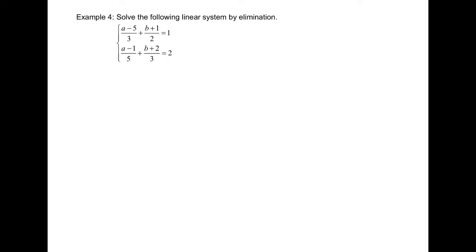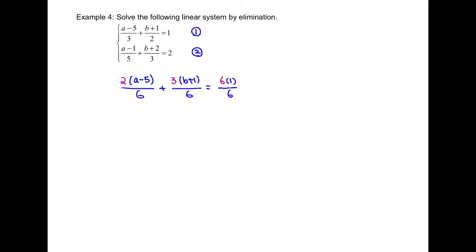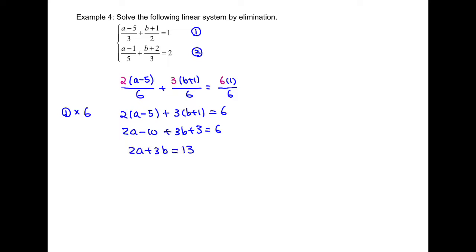Example 4: now we're going to solve a linear system with fractions. First, let's label equation 1 and equation 2, and we're going to simplify each equation. In equation 1, the common denominator between 2 and 3 is 6. We rewrite all three terms with denominator 6. For the first fraction, denominator 3 becomes 6 by multiplying by 2, so the numerator is also multiplied by 2. For the second fraction, 2 becomes 6 by multiplying by 3, so the numerator is multiplied by 3. The constant 1 can be written as 1 over 1, so the numerator and denominator are both multiplied by 6. We now multiply equation 1 by 6 to remove the denominators, generating equation 3.